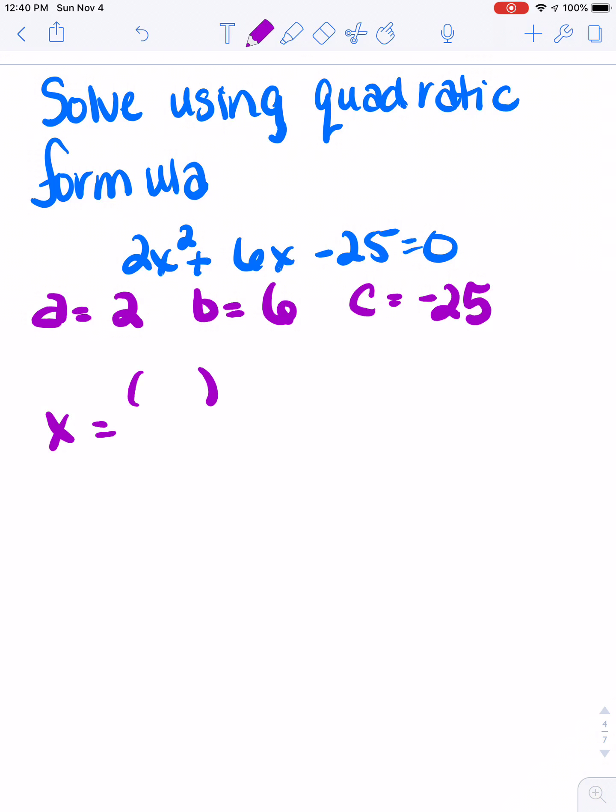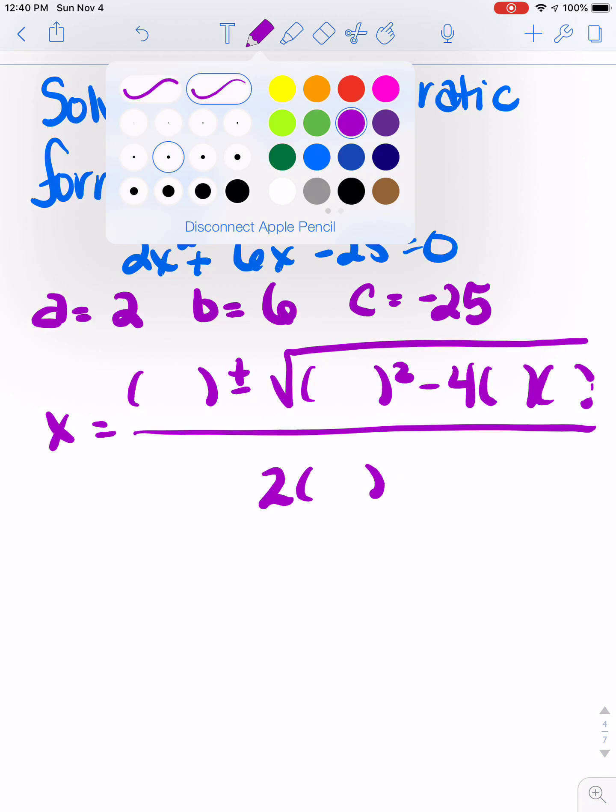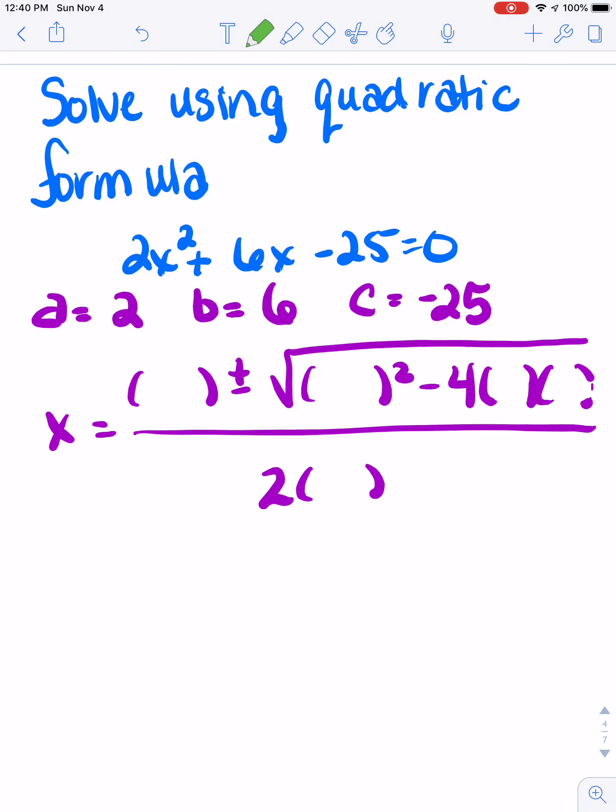So I'm going to start out with that blank version of quadratic formula that we've been using in class. Basically took the a's, b's, and c's out of it and put parentheses so that it'll be ready to plug in our values. So if I look at this, a is 2, so I'm going to get 2's here.